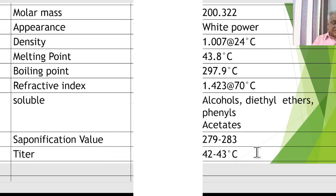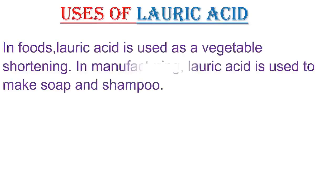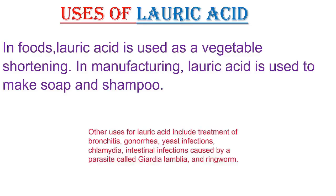Uses of Lauric Acid: In food, Lauric Acid is used as a vegetable softening agent. In manufacturing, it is used to make soaps and similar products. Other uses include treatment of bacterial and yeast infections, Chlamydia, intestinal infections caused by a parasite called Giardia, and ringworm. These are some of the uses of Lauric Acid.